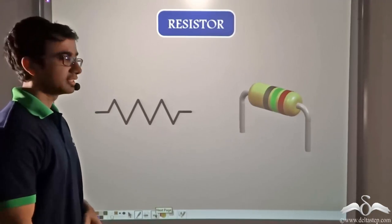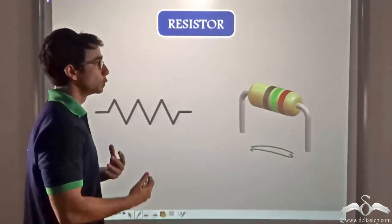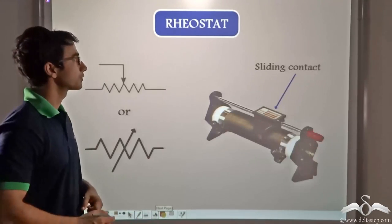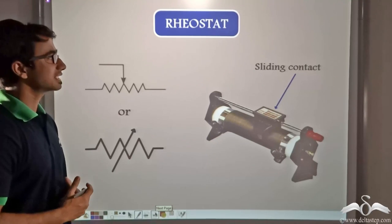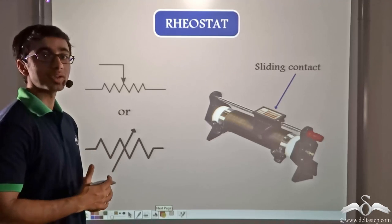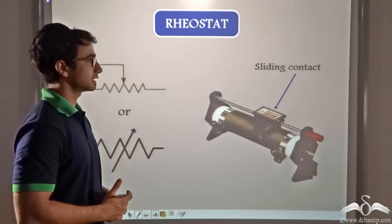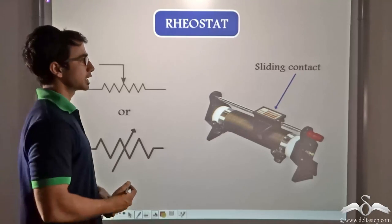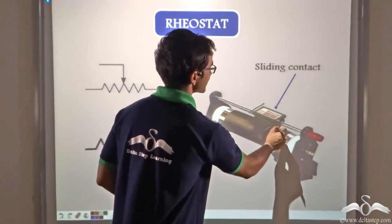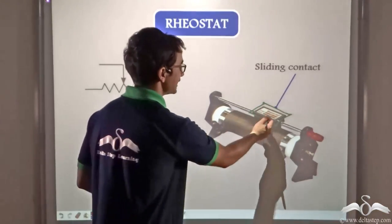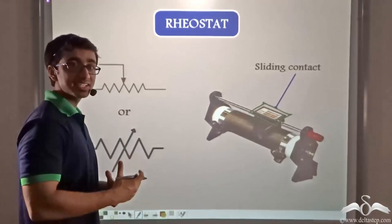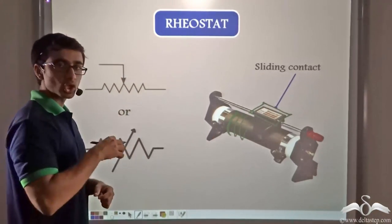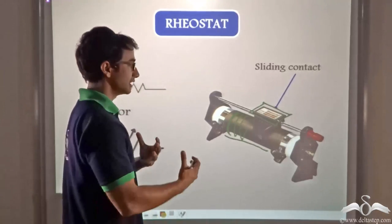Likewise, a resistor can be depicted in a circuit diagram with a zigzag-like symbol. Now we learn about a rheostat, which is a variable resistance — a resistance whose value you can change. The rheostat has a sliding contact that is moved from one end to the other to change the resistance of the wire coiled around it. By sliding the contact, we are able to change the resistance, making it a variable resistance.